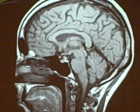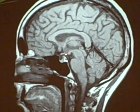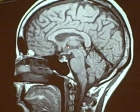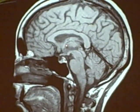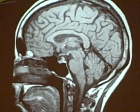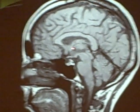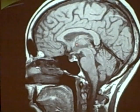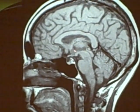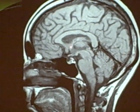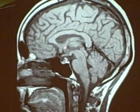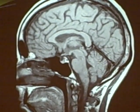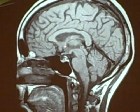Below the optic chiasm is the pituitary. Coming up in here, this is the interventricular foramen of Monroe. CSF, as it gets from the lateral ventricle into the third ventricle — which is this space right in here — gets there via the foramen of Monroe. And then we have the anterior commissure right here, a pathway that connects the right and left temporal lobes.